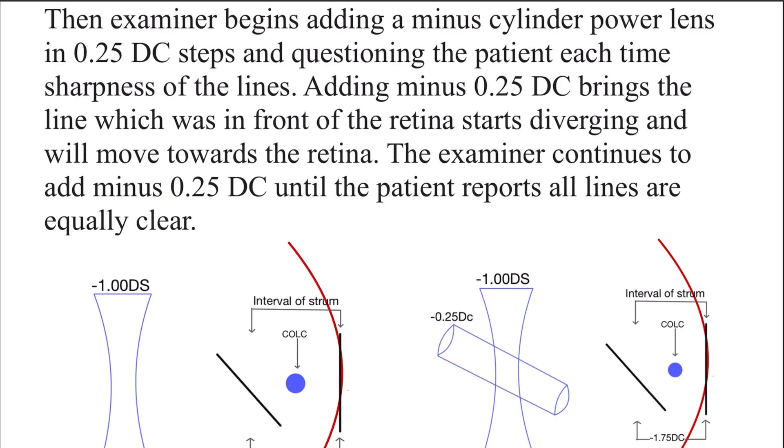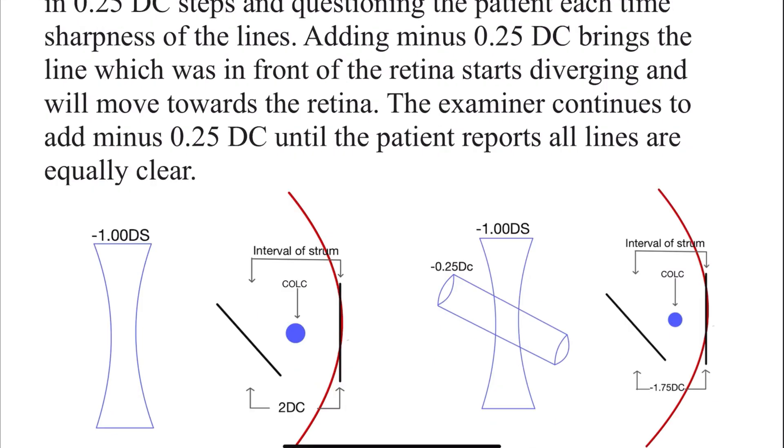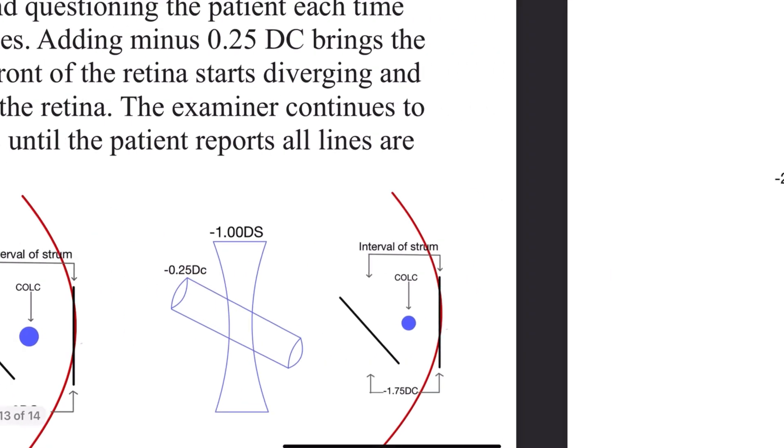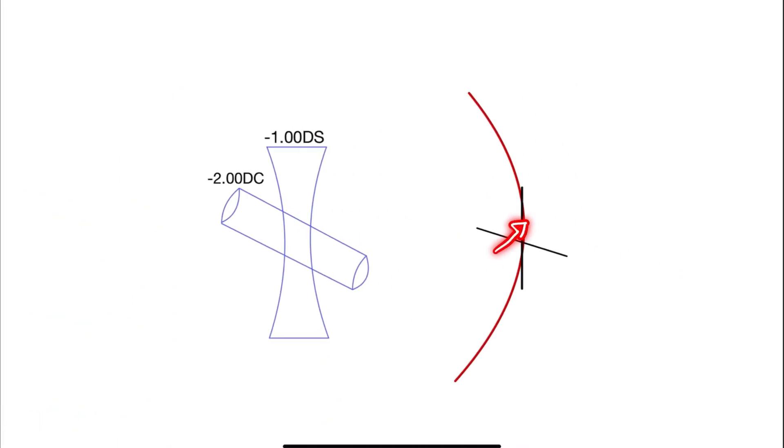And the examiner continues to add minus 0.25 until the patient reports all the lines are equally clear. So in such cases, we will start adding 0.25 diopter cylinder. What that cylinder is going to do is diverge this ray backwards toward the retina. We will keep on adding this minus 0.25 diopter cylinder until both of these lines are on the retina. At this point, the patient is going to report all the lines are equally clear in the chart.